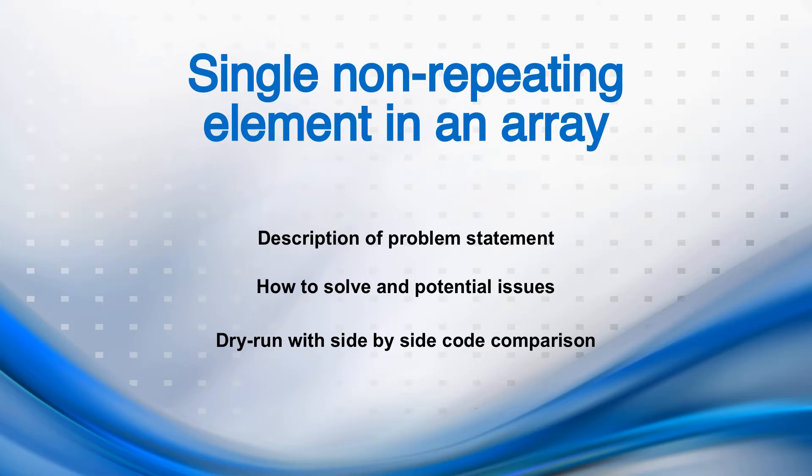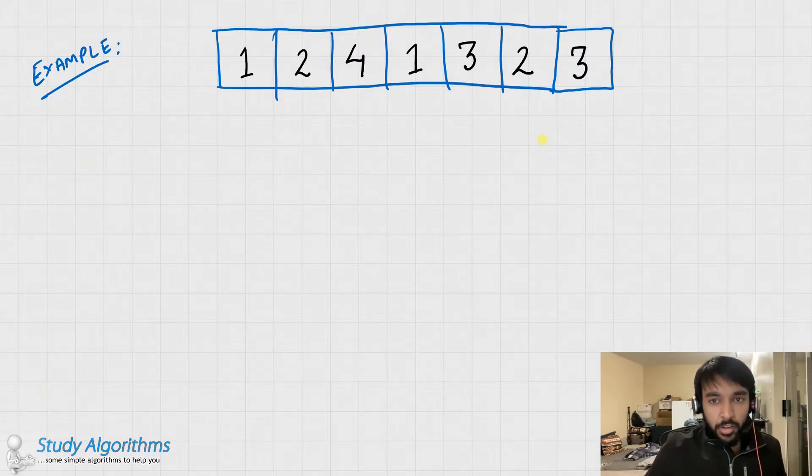So let us dive into the problem. Let's say you are given an array of integers that has odd number of elements. The special thing about this array is that all the elements are occurring twice except one. We need to find that number in the minimum amount of time possible.